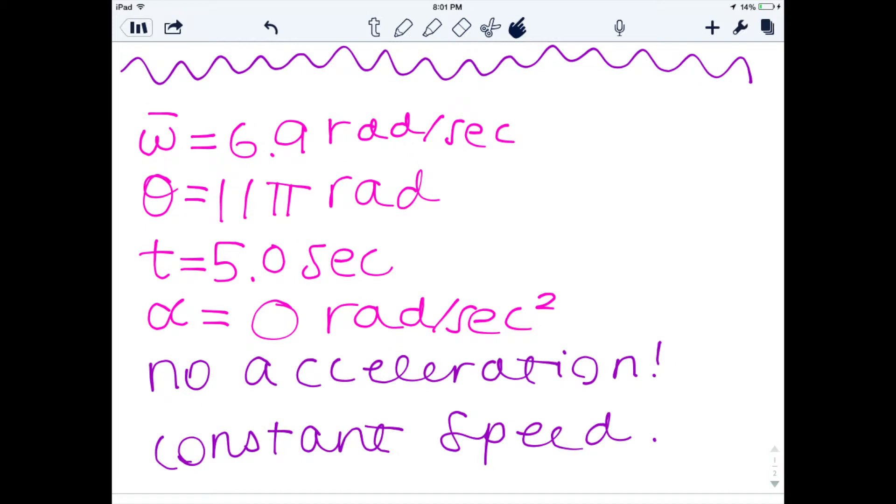Going on, we would usually calculate for the acceleration at this point with all of our constants listed. However, there is no acceleration, so our batons and knives, in this case, remain at a constant speed.